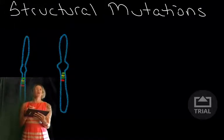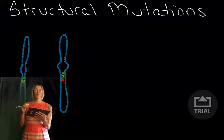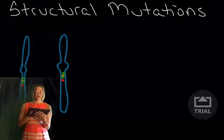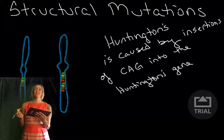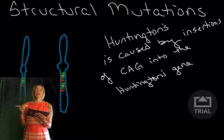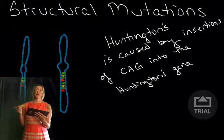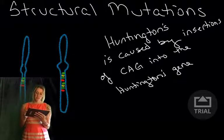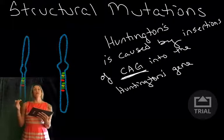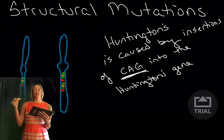Another structural mutation is an insertion. In this case, instead of having one copy of these four base pairs, now we have two copies of those four base pairs. Huntington's disease is caused by a bunch of insertions into the Huntington's gene, insertions of this specific triplet CAG.